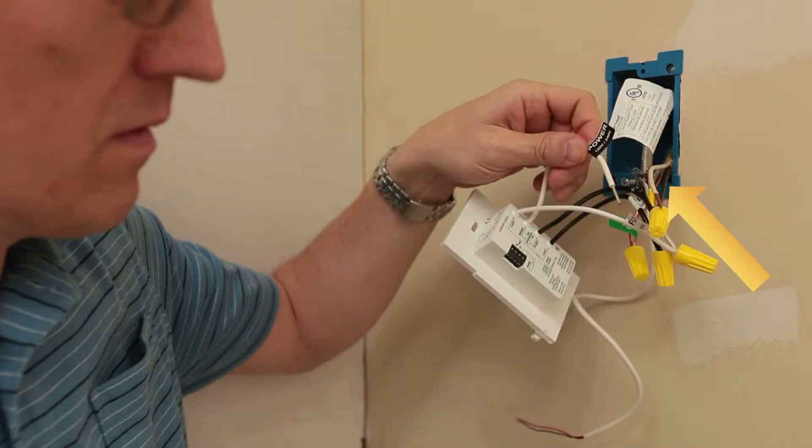The white neutral wire from the power supply connects to the white line wire on the back of the control.